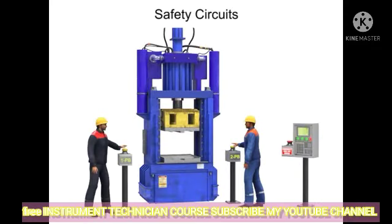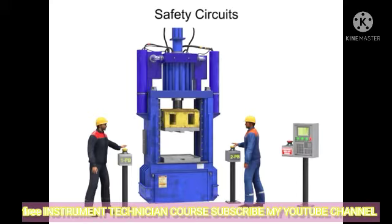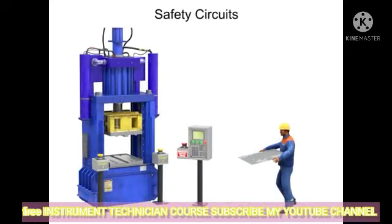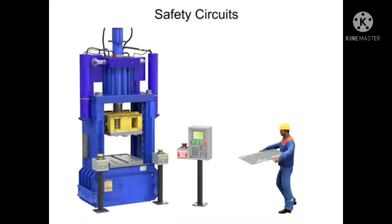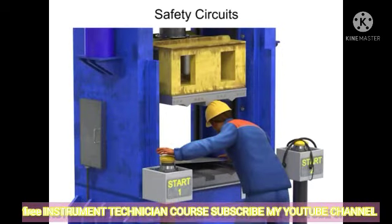While two-hand controls wired in series is ideal for machines with two operators, it becomes unsafe when only one operator is present. Although two buttons are still required, it becomes much easier for a single operator to tie or weigh down one button, allowing unsafe operation.